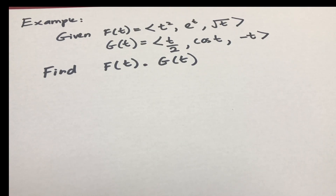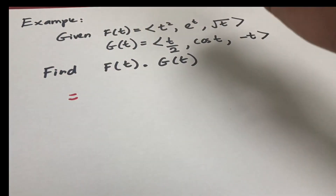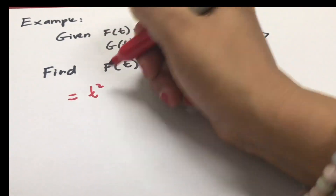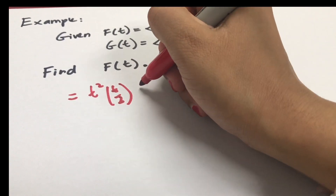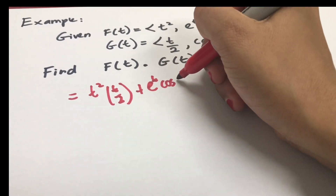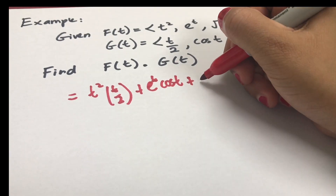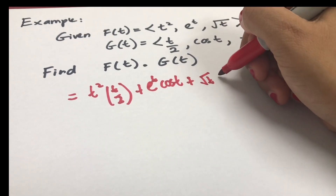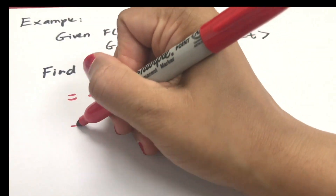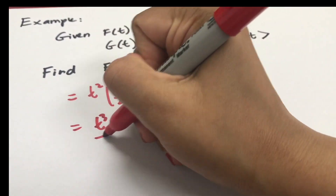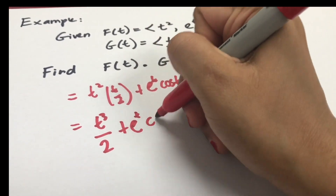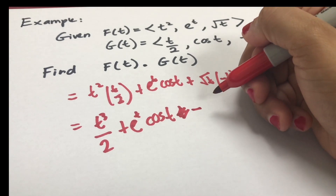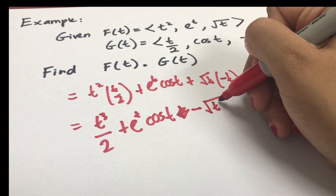Find the dot product of f of t and g of t. This is simply t² multiplied by t/2, plus the square root of t multiplied by negative t. Here we have t³/2 plus e^t cos(t) minus the square root of t cubed.